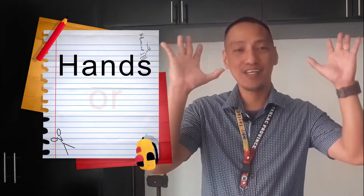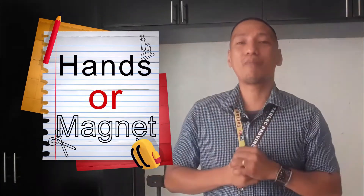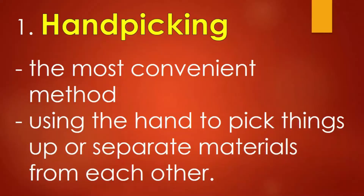First up, the group of picking. Under this group, we have two ways to pick up things manually: one is by simply using our hands, while the other method is by using a magnet. Number one: hand picking. Hand picking is the most convenient method of using the hands to separate solid-to-solid mixtures or a mixture of liquid with large solid particles.